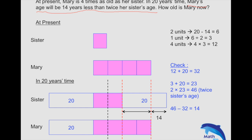We can work it out and see that at present the sister is 3, Mary is 12. In 20 years time it would be 32 and 23. But bear in mind that we need to double it, and then we take 46 minus 32. Does it give us 14? Yes it does. And that's how we solve the question, easy as that.